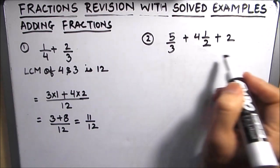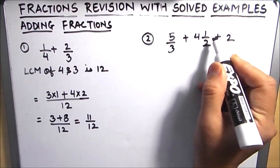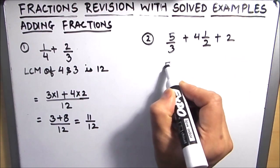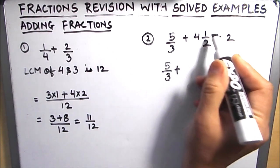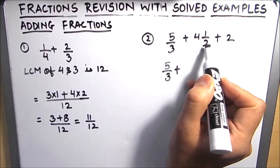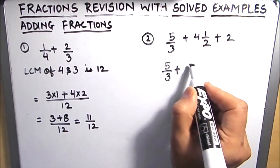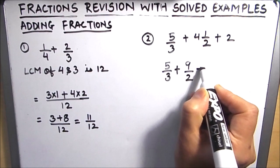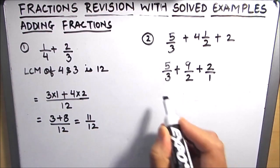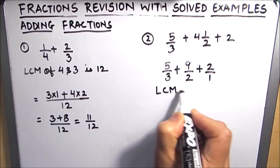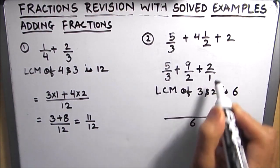Let's move on to the next example. Whenever there is a mixed fraction, we first convert it into an improper fraction. So this becomes 5 over 3. The next mixed fraction is converted: 2 times 4 plus 1 gives 9 over 4, wait — 2 times 4 plus 1 gives 9 over 2. The last one is 2 over 1. Now we find the LCM of 3, 2, and 1, which is 6, and 6 will be the common denominator for all three fractions.